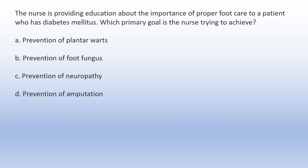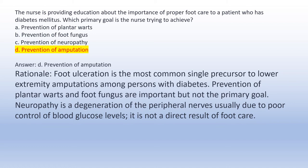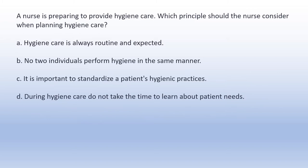The nurse is providing education about proper foot care to a patient with diabetes mellitus. Which primary goal is the nurse trying to achieve? A. Prevention of plantar warts. B. Prevention of foot fungus. C. Prevention of neuropathy. D. Prevention of amputation. Answer D: Prevention of amputation. Rationale: Foot ulceration is the most common single precursor to lower extremity amputations among persons with diabetes. Prevention of plantar warts and foot fungus are important but not the primary goal. Neuropathy is not a direct result of foot care.